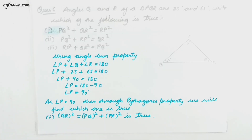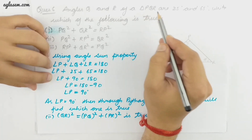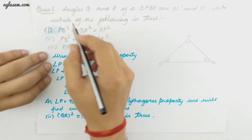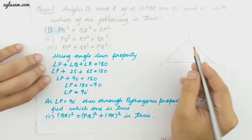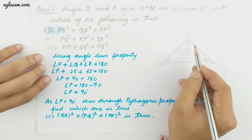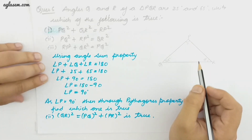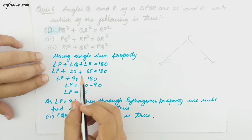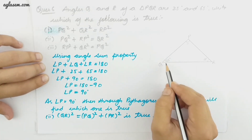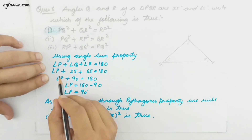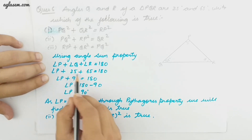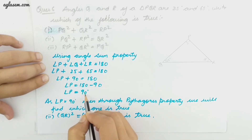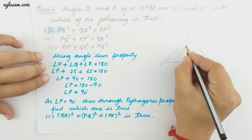Question 6: Angles Q and R of triangle PQR are 25 degrees and 65 degrees. Which of the following is true? We first find angle P. Using the angle sum property, the sum of all three angles equals 180 degrees. We have 25 and 65, and their sum is 90. So 180 minus 90 gives angle P equals 90 degrees, meaning it is a right triangle.